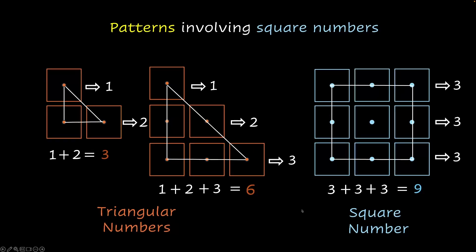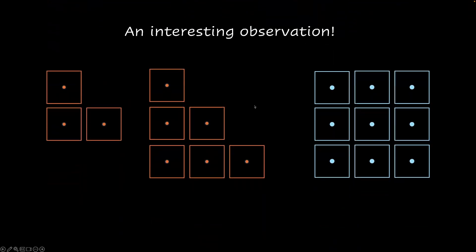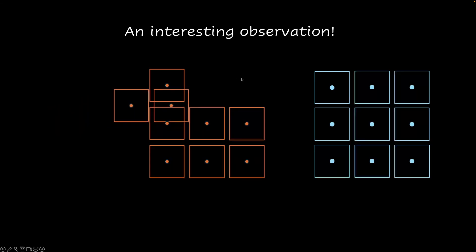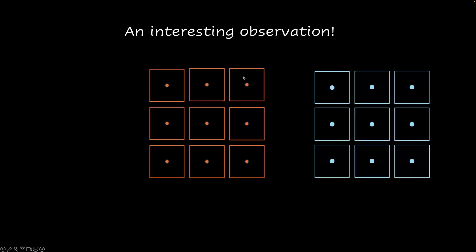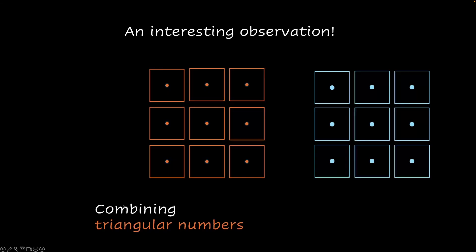Here's the interesting part. Could you imagine combining these two configurations to get this configuration? So let's combine them — let's put this block over here and move these blocks over here. And voila, you can see that these are exactly the same configuration. That is an interesting observation: combining triangular numbers gives us a square number.